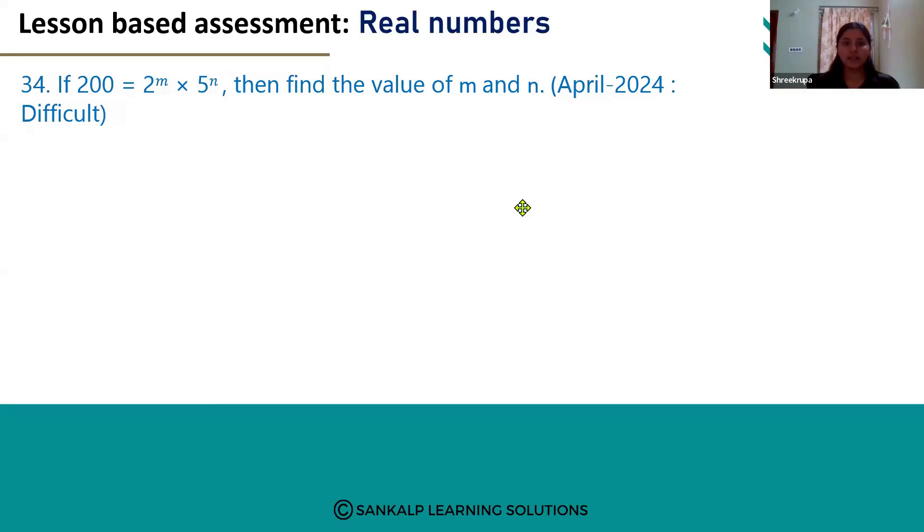Hello everyone, let's see question number 34. If 200 is equal to 2 power m into 5 power n, then find the values of m and n.